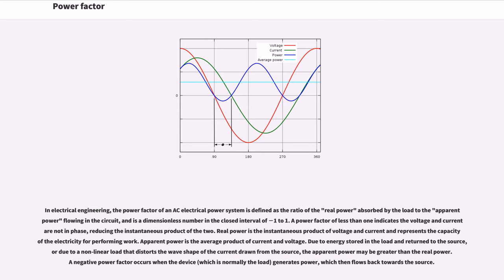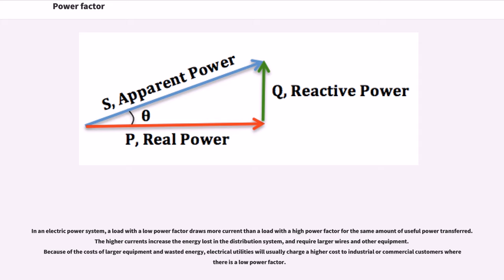In an electric power system, a load with a low power factor draws more current than a load with a high power factor for the same amount of useful power transfer. The higher currents increase the energy lost in the distribution system and require larger wires and other equipment. Because of the costs of larger equipment and wasted energy, electrical utilities will usually charge a higher cost to industrial or commercial customers where there is a low power factor.